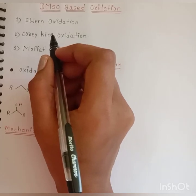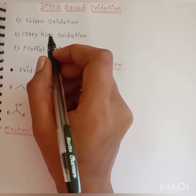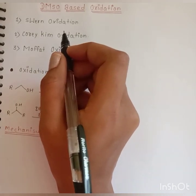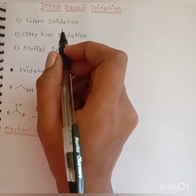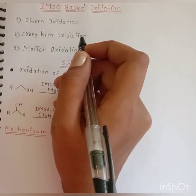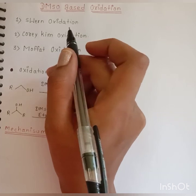Welcome to my channel SP Star Chemistry. I have started a series on reagents and in my previous videos I have discussed three reagents: selenium dioxide, Gilman reagent, and DDQ. In this video I am going to discuss DMSO based oxidation.